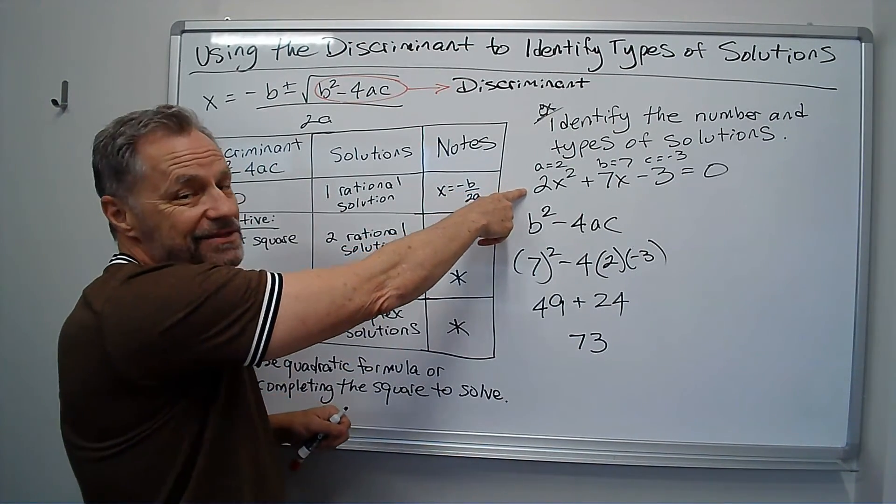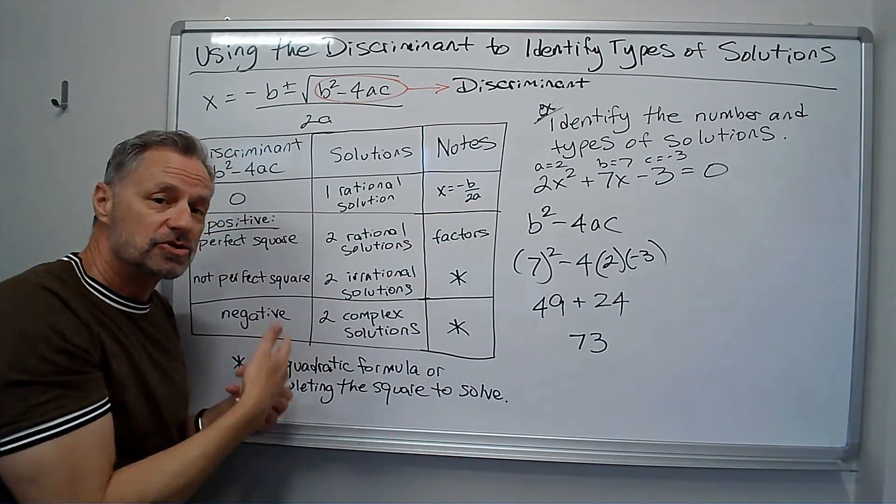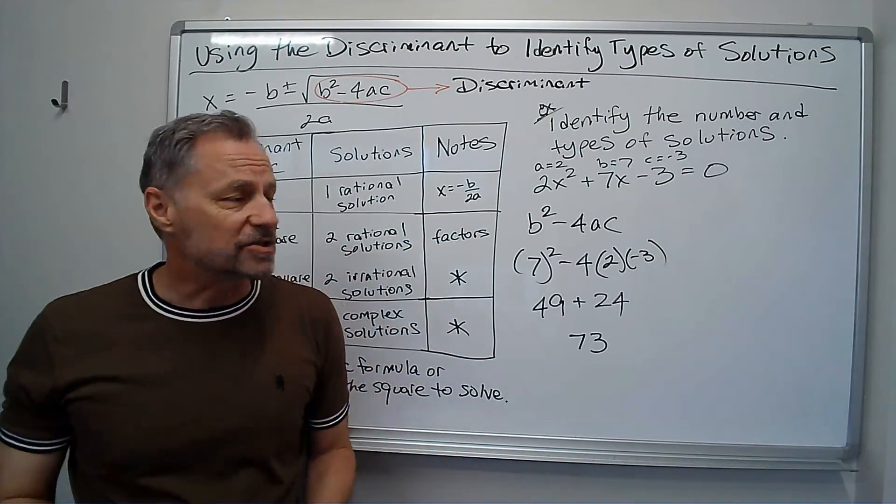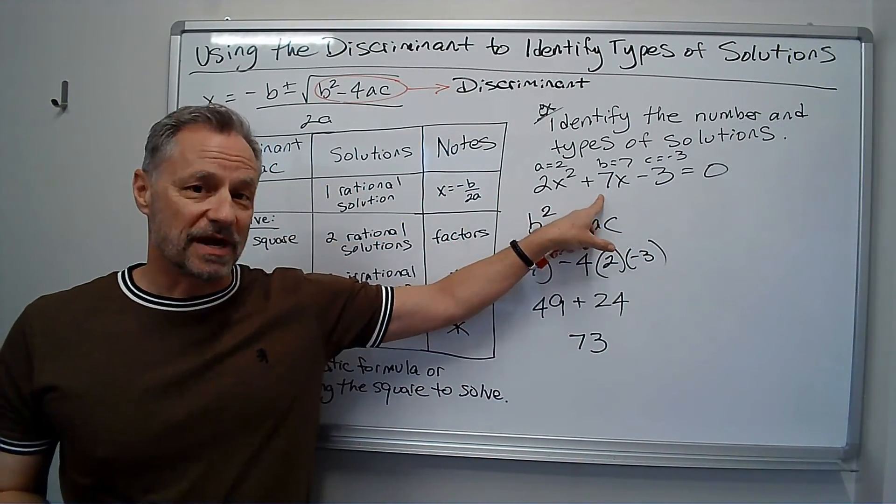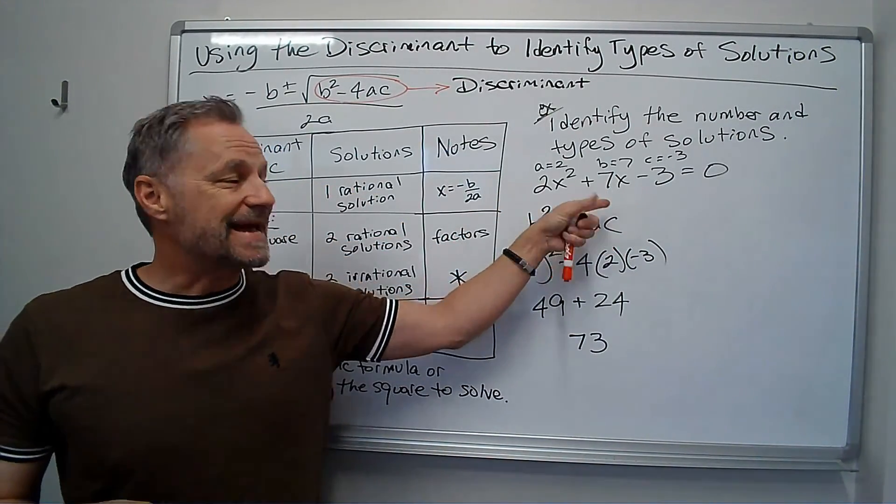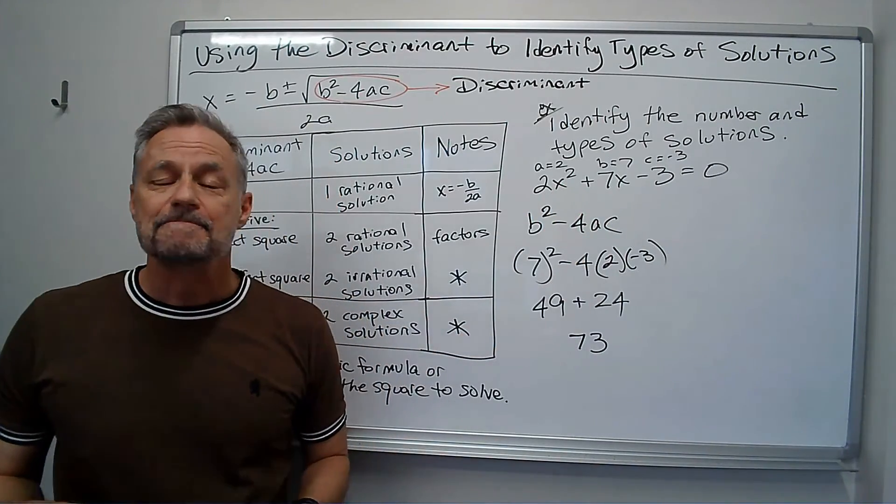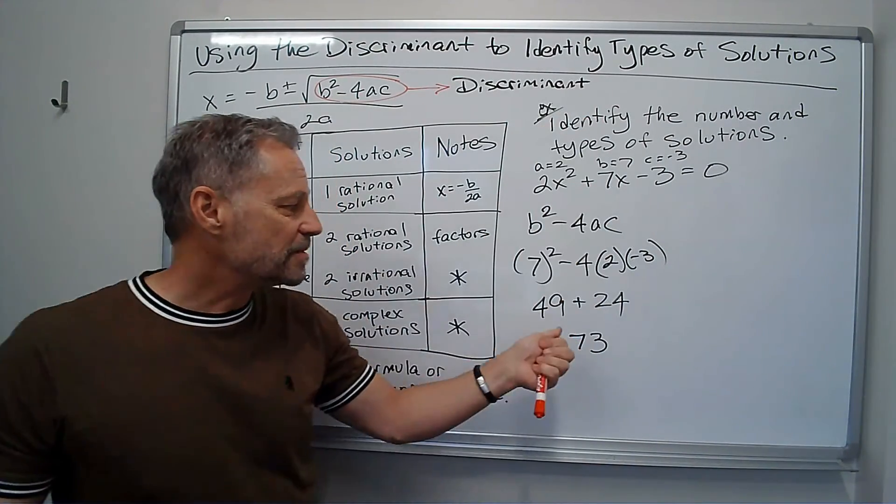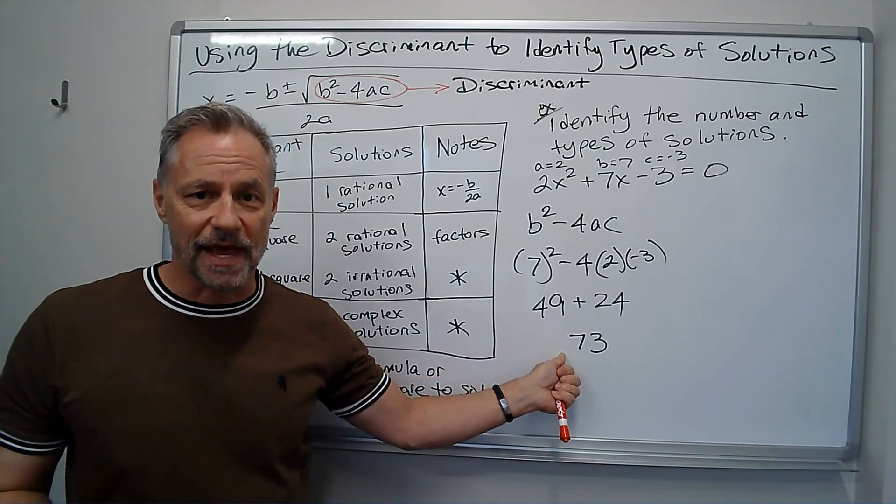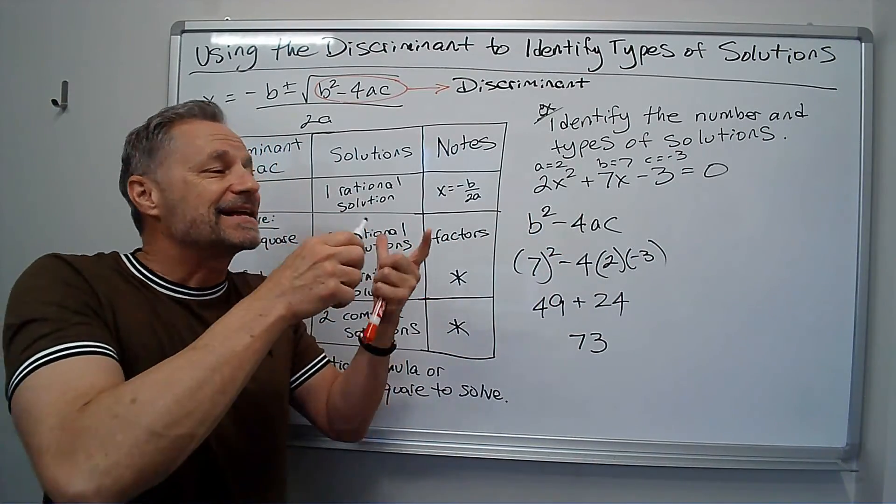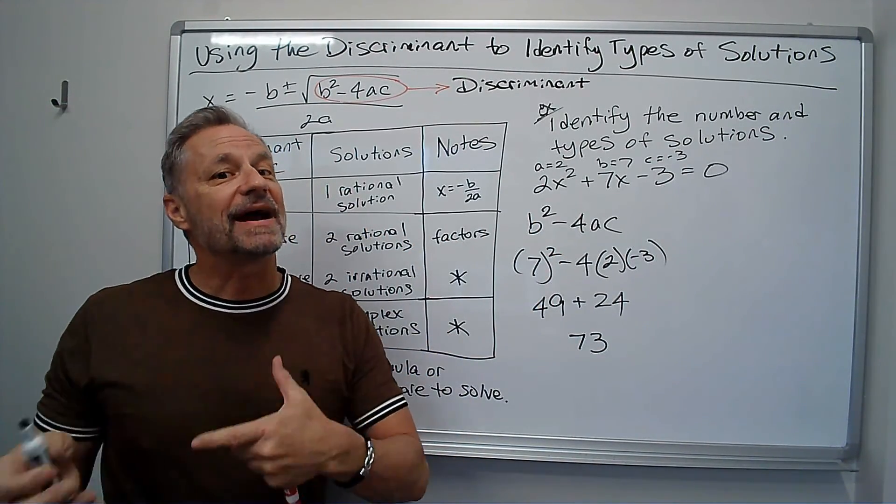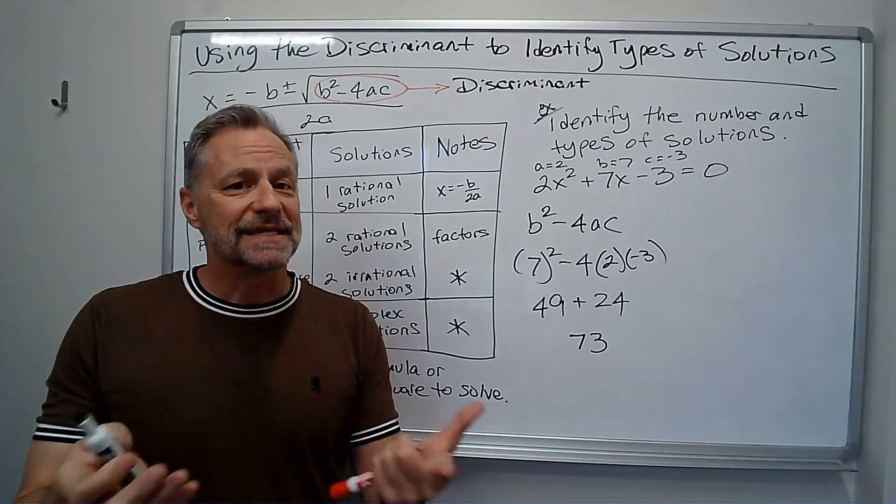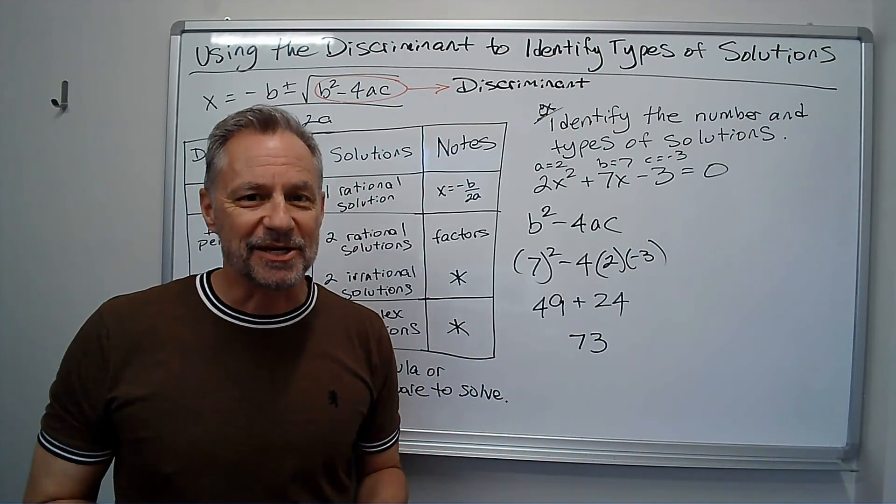So if I want to solve that, I can't solve it by factoring. I could use the quadratic formula. I could use completing the square. This would be best to use the quadratic formula. It's not set up nicely to do completing the square. But the discriminant tells me right away how to do that. That's its purpose. That's its use. Sometimes it will help you identify how to solve or at least the type of solutions you would expect to get.